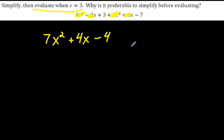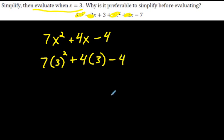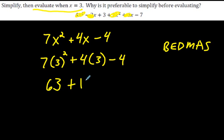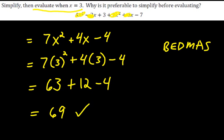Make sure you watch the video on BEDMAS if you're unsure. First, 3 to the power of 2 is 9, because 3 times 3 is 9. Then 9 times 7 is 63. 4 times 3 is 12. So we have 63 plus 12 minus 4. 63 plus 12 is 75, and 75 minus 4 is 69. We are done — that's how you simplify and then evaluate.